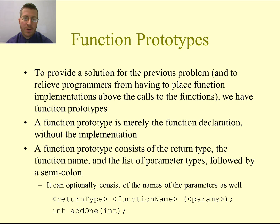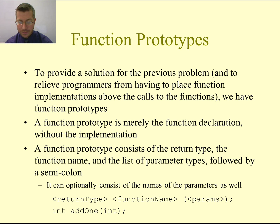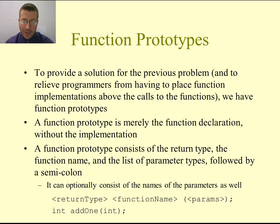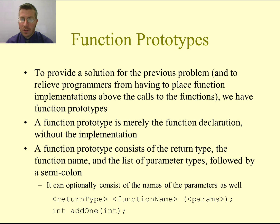A function prototype consists merely of the function declaration without the implementation. That would be the return type, the name of the function, the parentheses, the parameter list, a closing parenthesis, followed by a semicolon — you just do not provide the implementation of the function. So we're just going to provide the definition of the function followed by a semicolon.